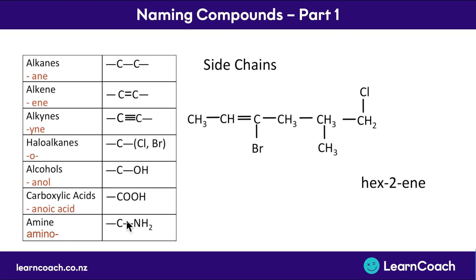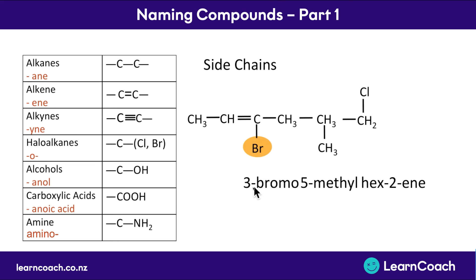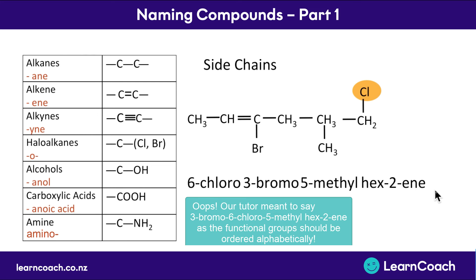We've also got extra groups on the side: an extra bromine, an extra chlorine, and a side carbon chain. We go through them one by one. The side chain has one carbon, so that's a methyl group, attached to the number five carbon. The bromine becomes 'bromo' with its carbon number - it's on carbon three, so that's 3-bromo. The chlorine becomes 'chloro' and it's on carbon six, so that's 6-chloro. Piece by piece: start with hex-2-ene, add the methyl group and its number, then the bromo group and its number, then the chloro group and its number, and keep going until all groups are accounted for.